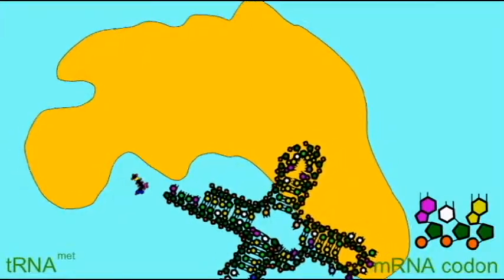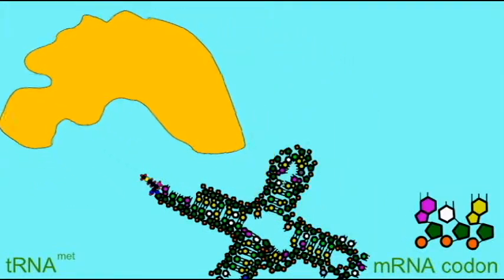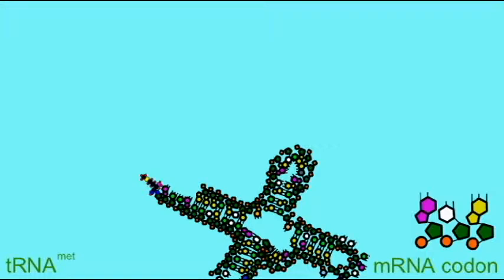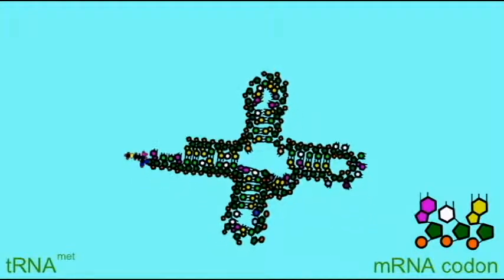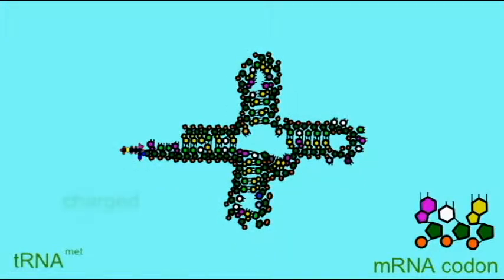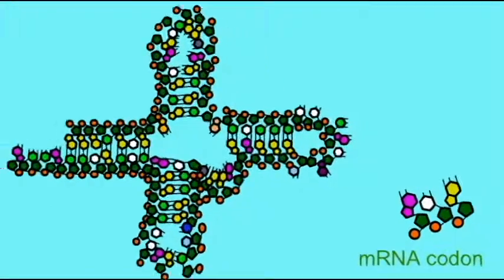Only the enzyme methionyl tRNA synthetase will attach methionine to tRNA met. On the end of the tRNA, opposite of that which attaches the amino acid, is an anticodon which will interact with the mRNA codon so that methionine is only placed at the sites where the mRNA codons specify.